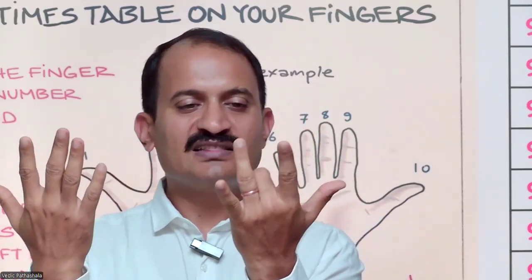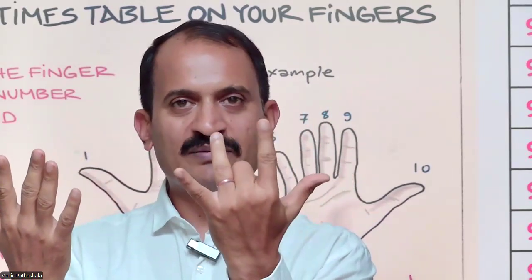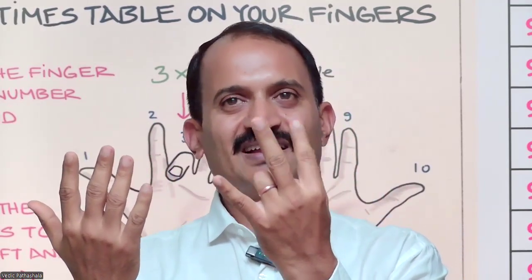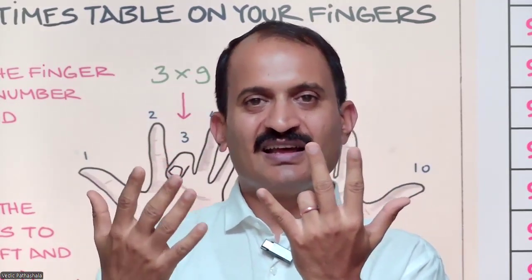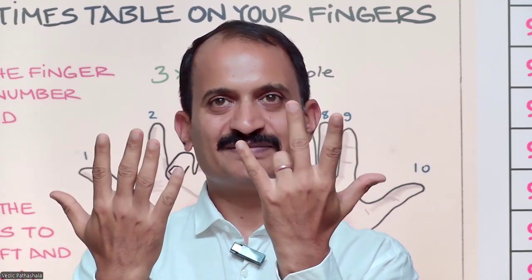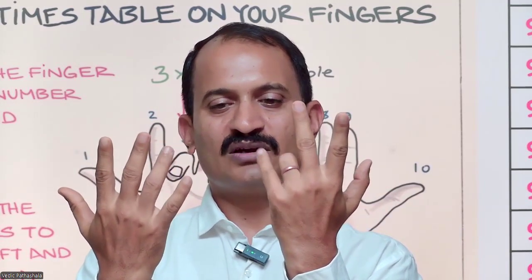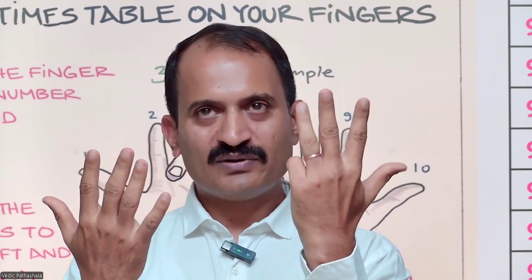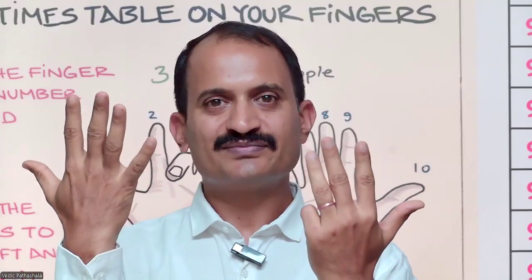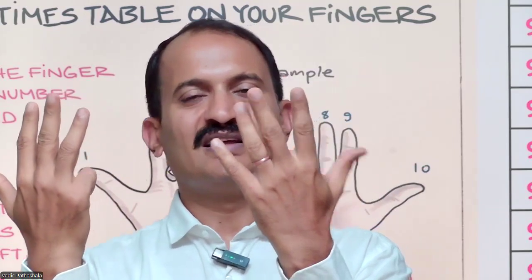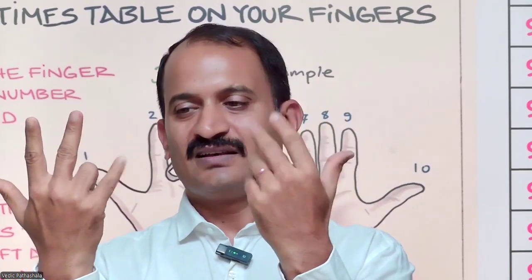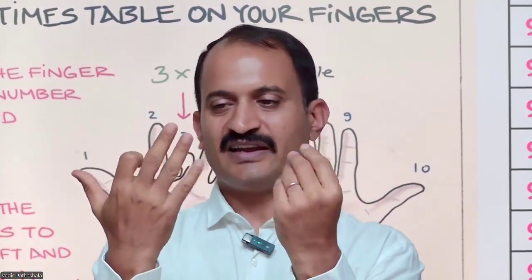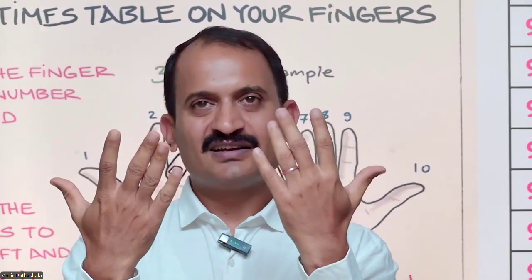Similarly, 9 threes: fold the third finger — 2 fingers to the left and 7 to the right, so 27. 9 fours: 3 fingers to the left (tens place 3) and 6 to the right (units place 6), so 36. 9 fives: fold the 5th finger — 4 to the left and 5 to the right, so 45. 9 sixes: 54. 9 sevens: 63. 9 eights: 72. 9 nines: 81. And 9 tens: 90.